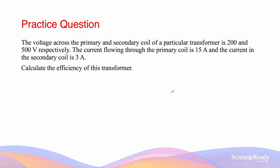Let's look at how you can calculate efficiency. The voltage across the primary and secondary coil of a particular transformer is 200 and 500 volts respectively. The current flowing through the primary coil is 15 amps and the current flowing through the secondary coil is 3 amps. Calculate the efficiency of the transformer.